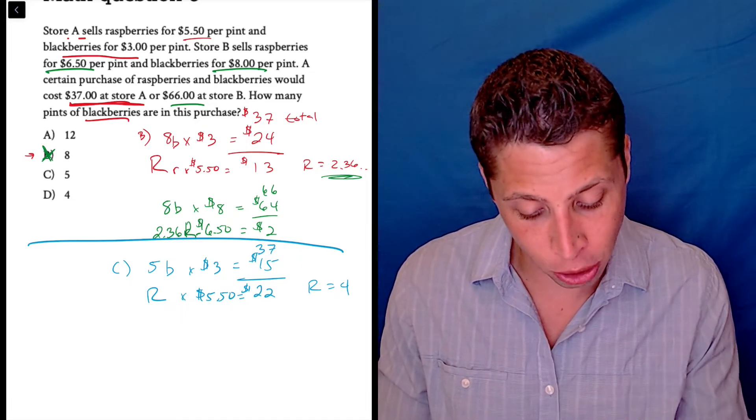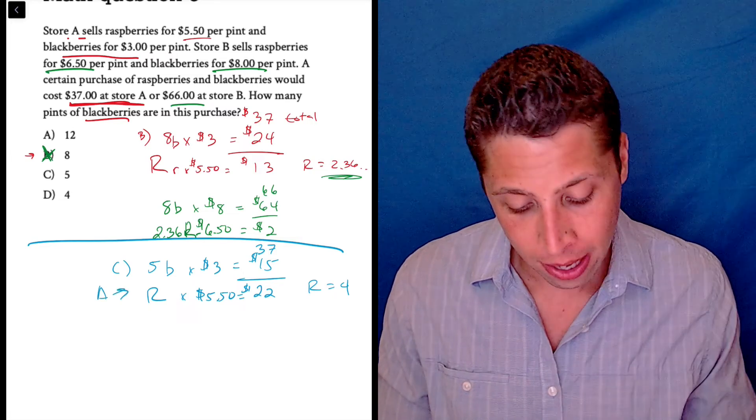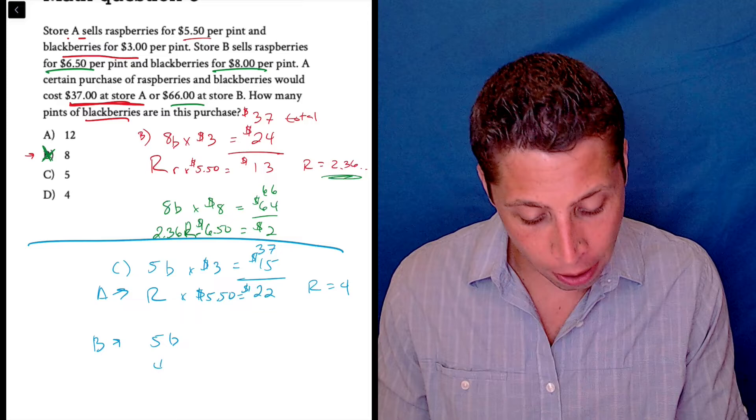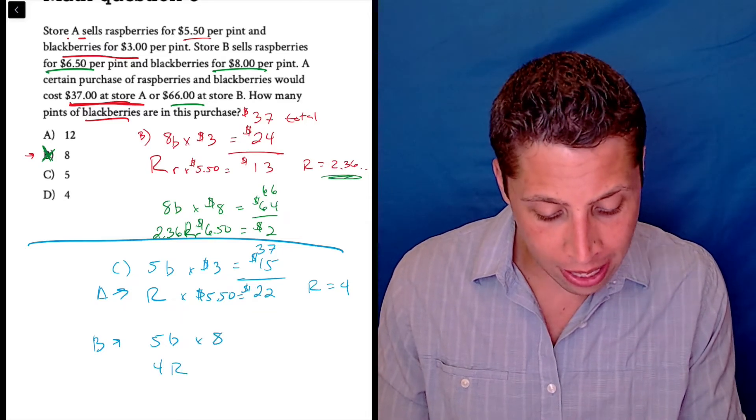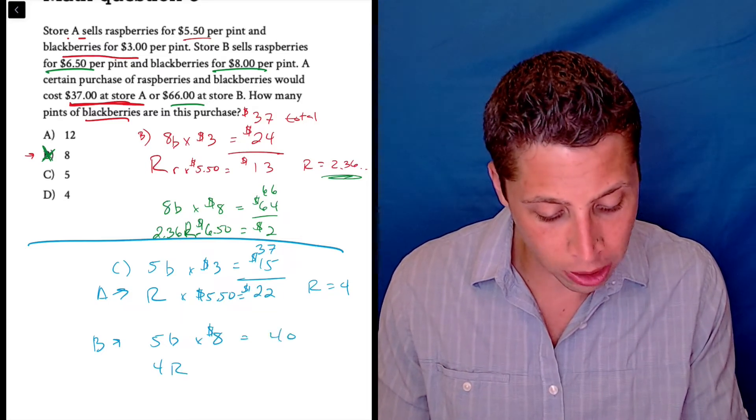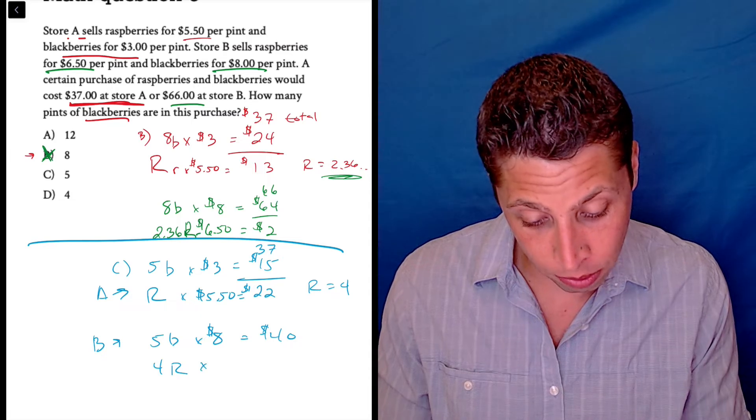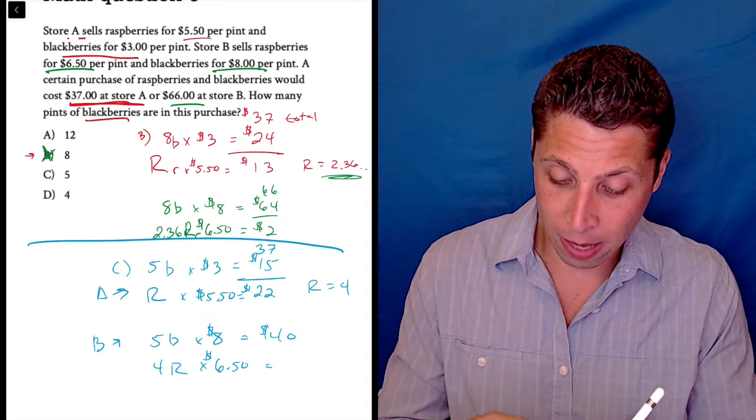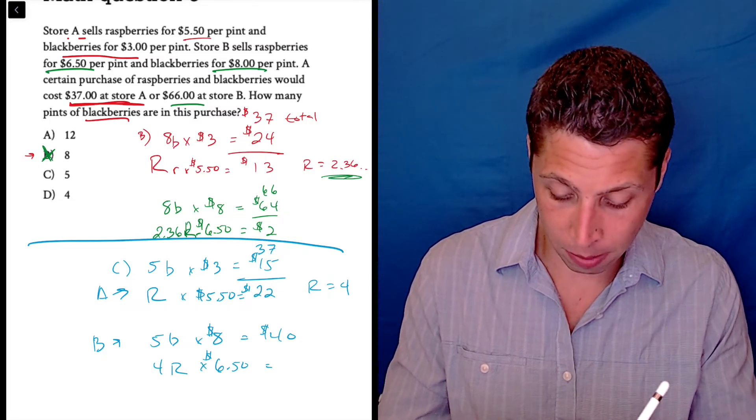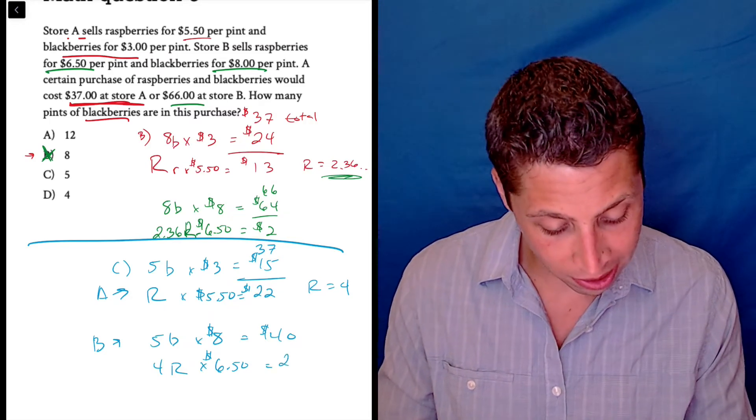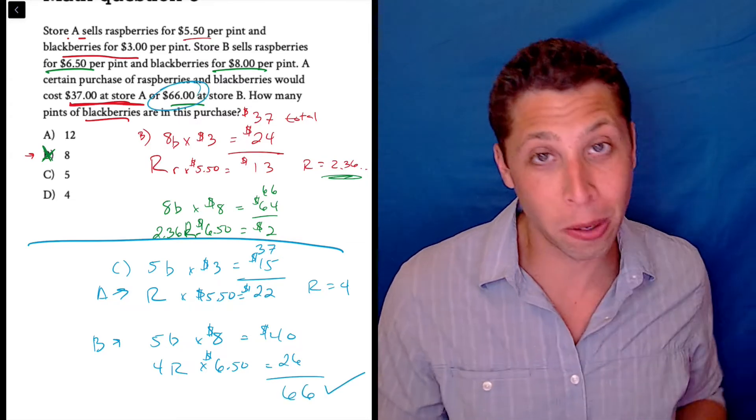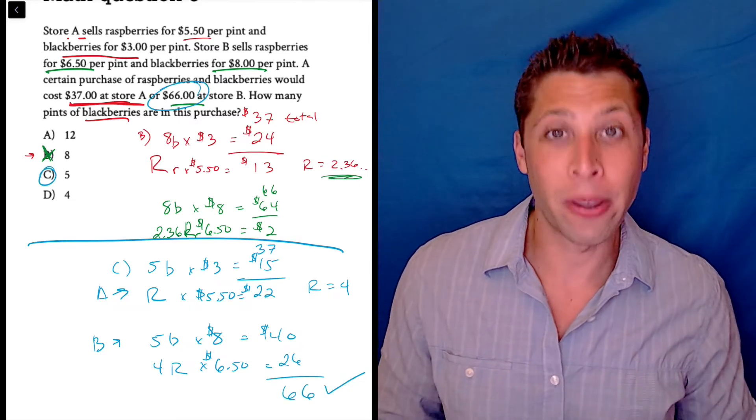This is all store A. Store B, it's still going to be 5 blackberries. It's now 4 raspberries. $8 a pint is $40. And this was what? $6.50 a pint. 4 times $6.50. 4 times $6.50 is $26. And what does that add up to? $66. Exactly what it was supposed to add up to. And now we have the answer.